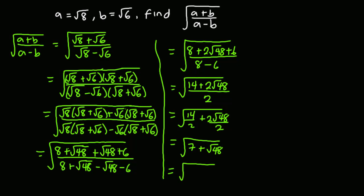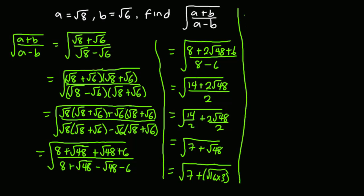√48 is the same as √(16 × 3), so this gives us square root of (7 + 4√3).